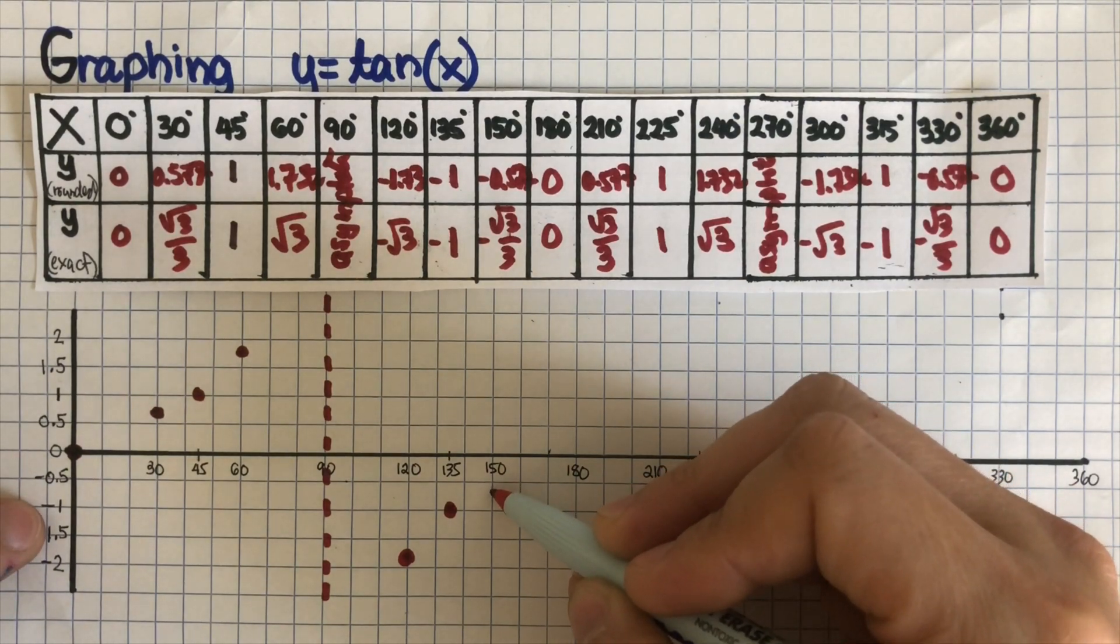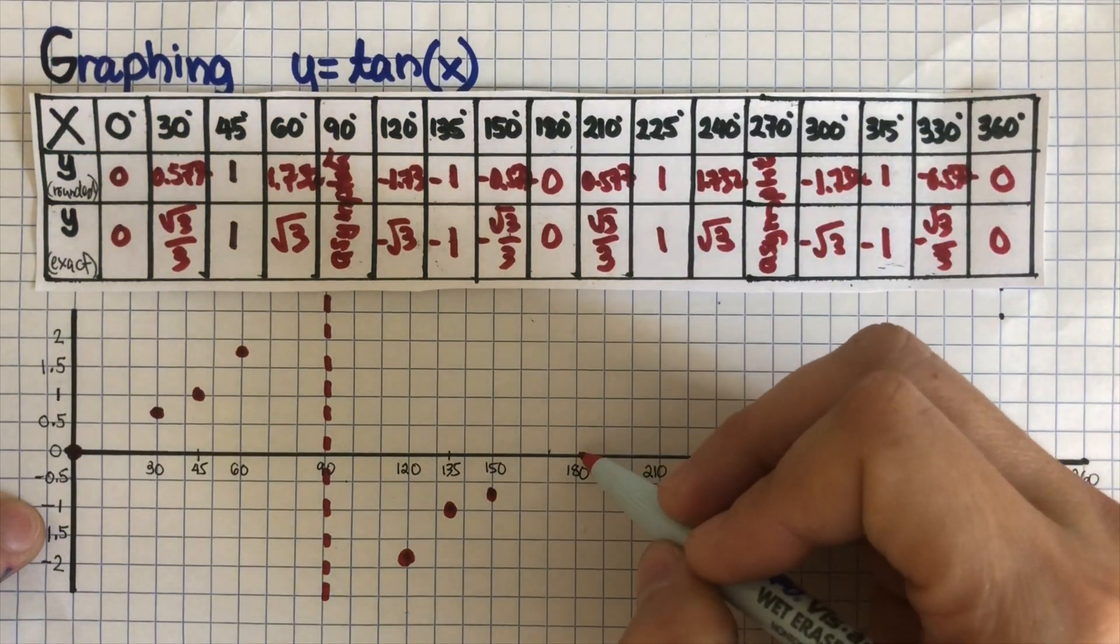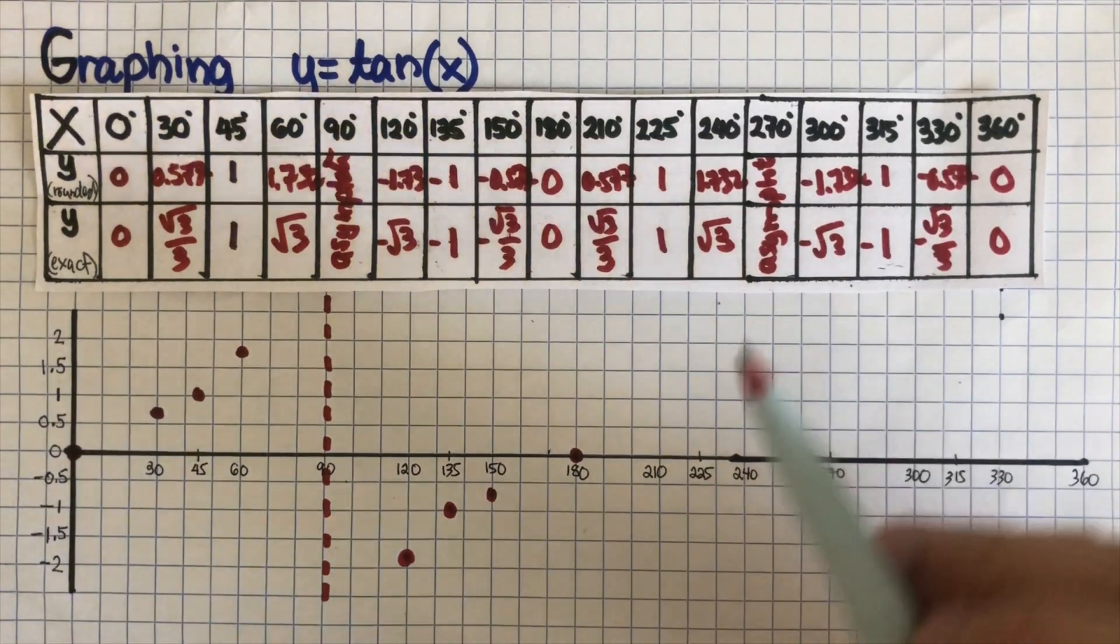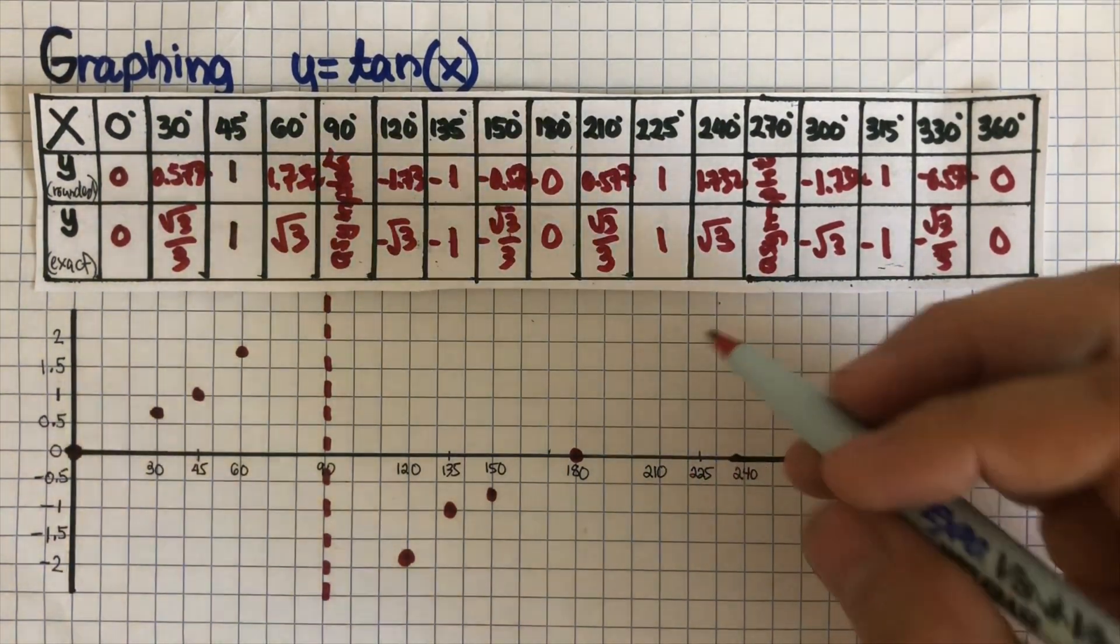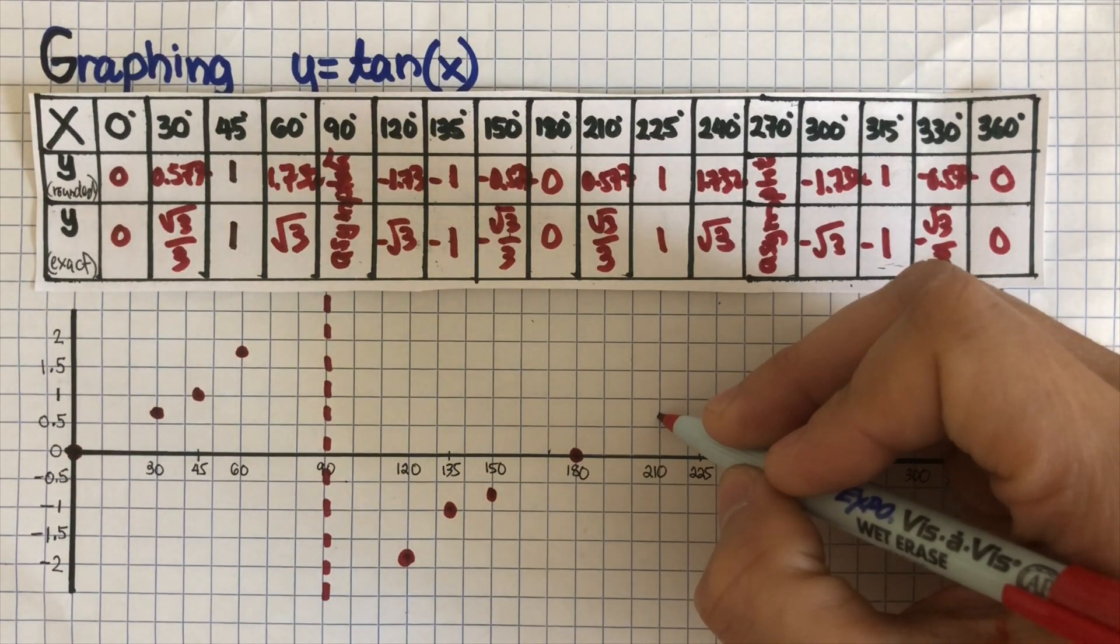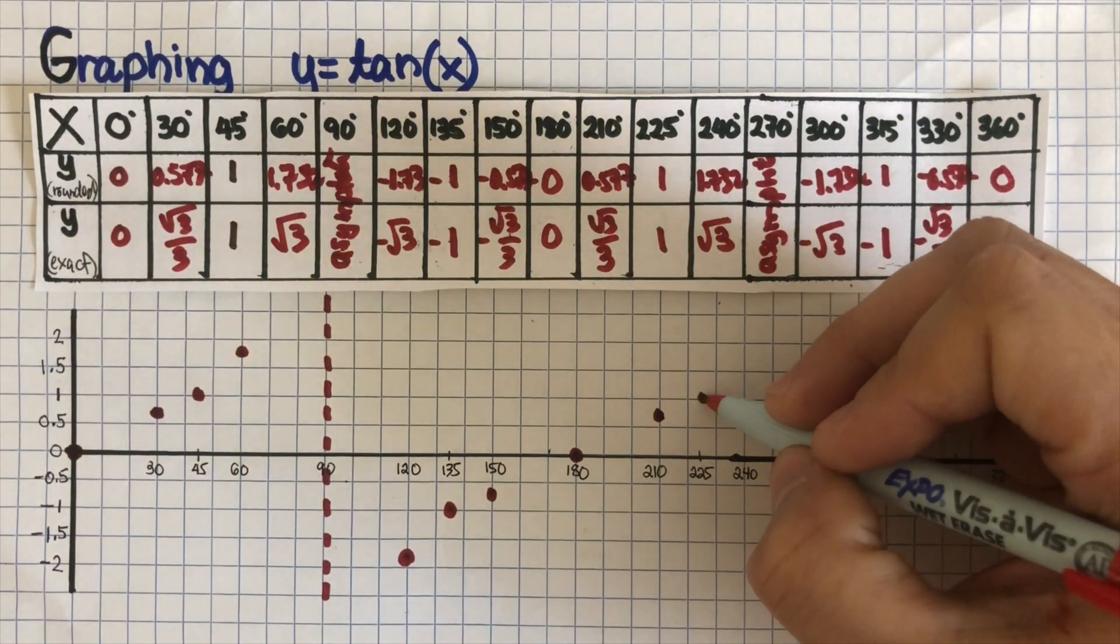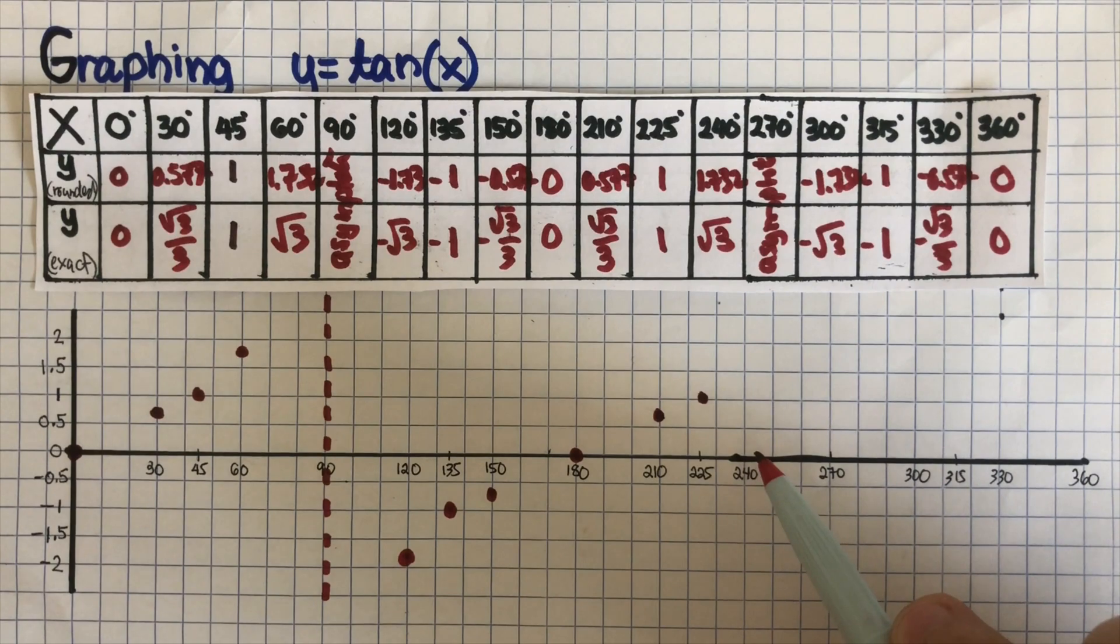And then 210 is 0.577, somewhere around here. And then 225 is a positive one, so it's somewhere around here. And then for 240 is 1.7732, so it should be somewhere around here.